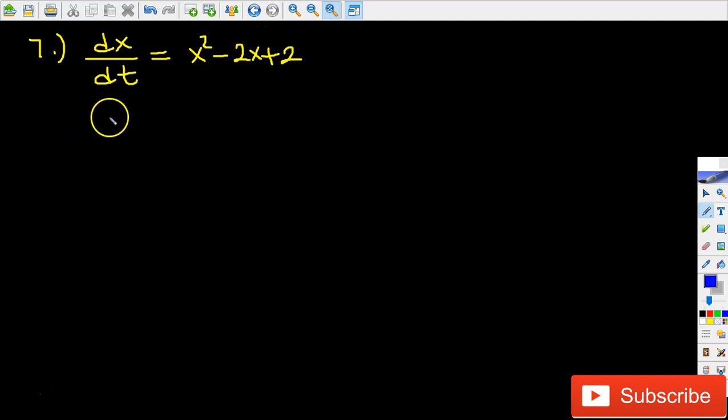What we're going to get is 1 over x squared minus 2x plus 2 times dx over dt equals 1.